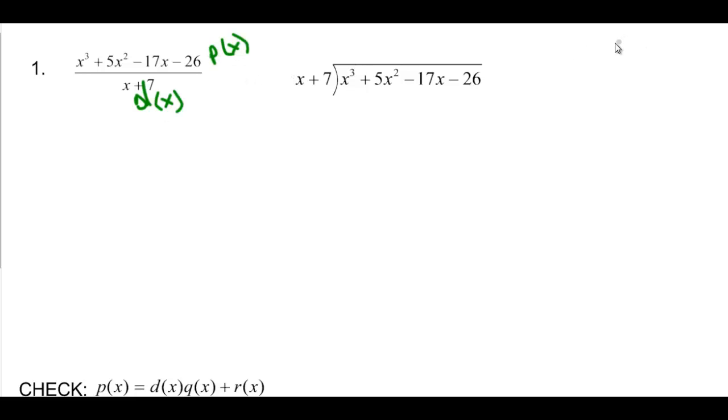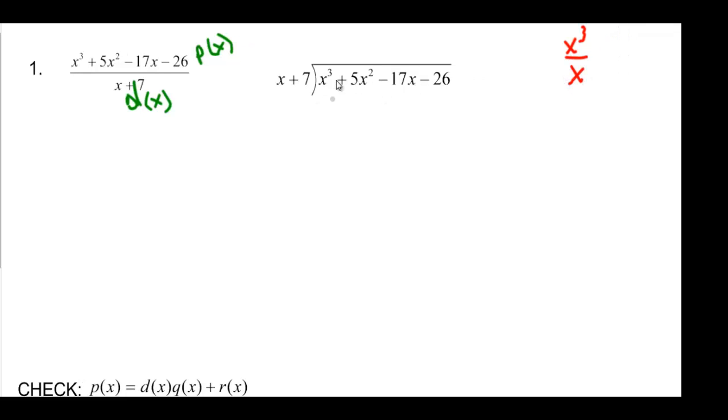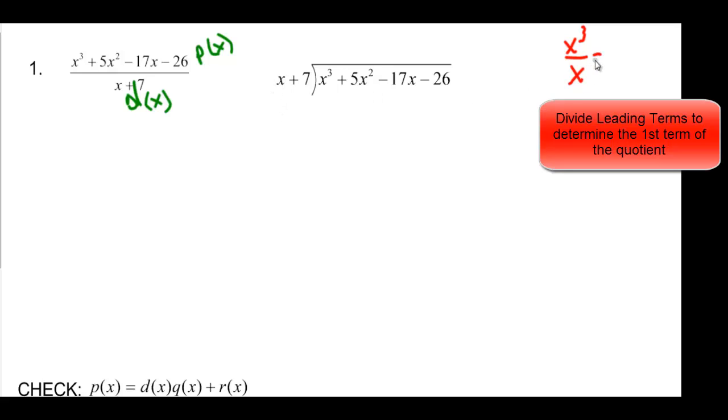We're going to come over here and say, okay, I've got X cubed that needs to be divided by that X. Take your first term and divide it by your first term on the outside. And that gives me X squared. I'm going to put my X squared on top and then I'm going to multiply.